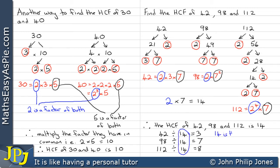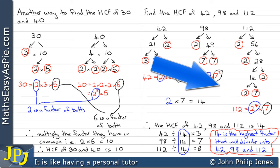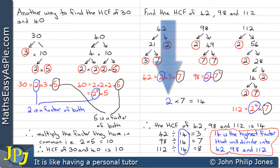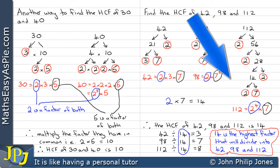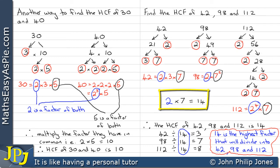We can see that 14 divides into everything, and 14 is the highest factor that will divide into 42, 98, and 112. Please note: when choosing the common prime factors, we didn't choose 2⁴ — we chose the 2. We didn't choose 7² — we chose the 7. This is important to remember: you choose the lowest one they have in common, find how many of the lowest ones they share, and then multiply them together. In this case, we located the 2 and the 7 to give us 14.